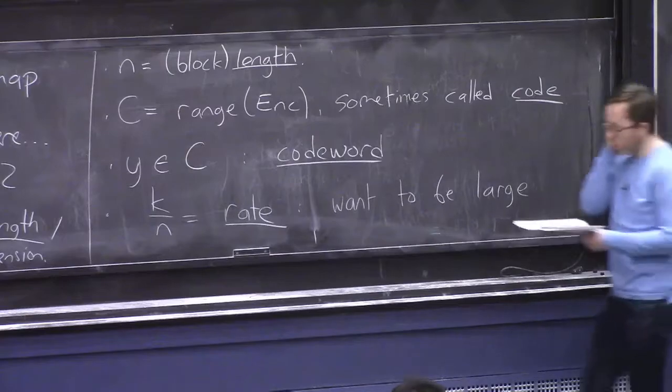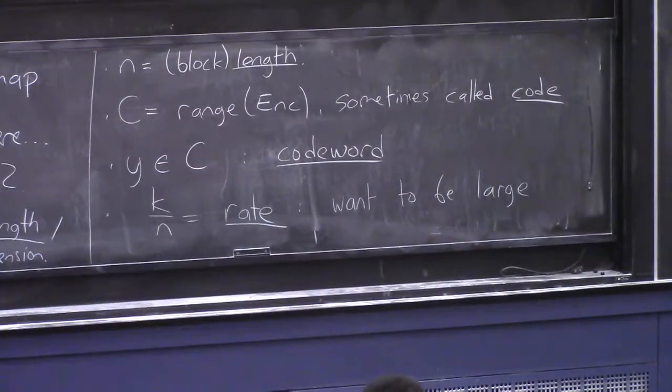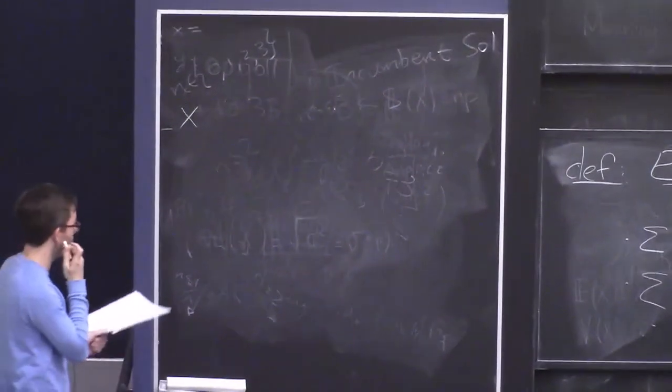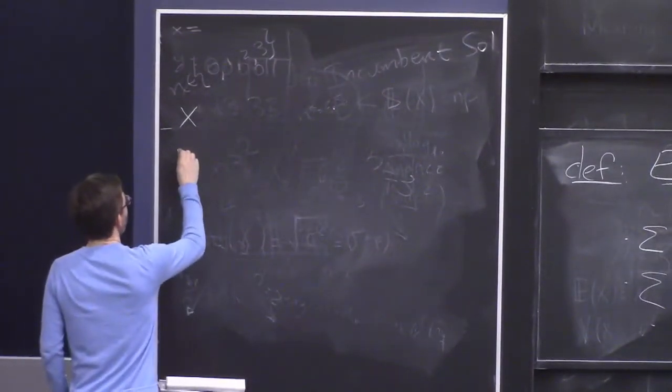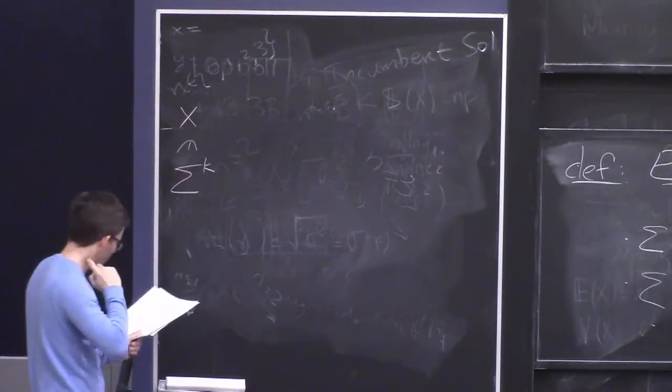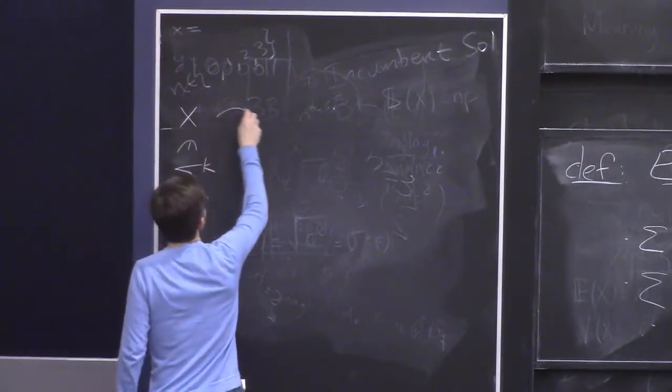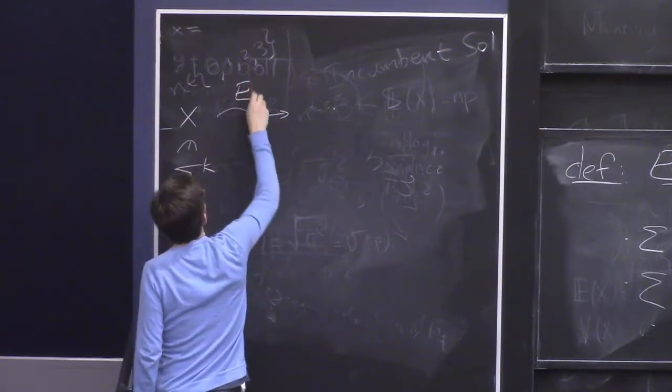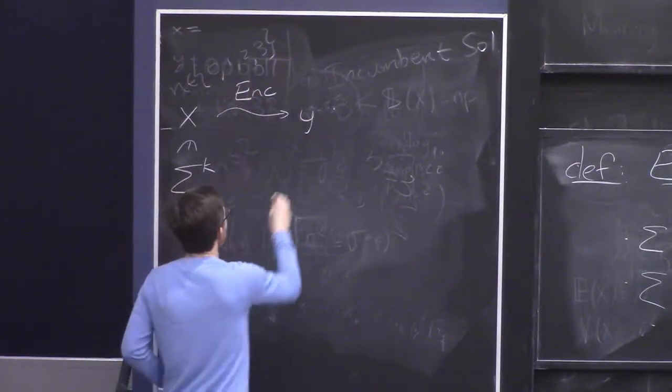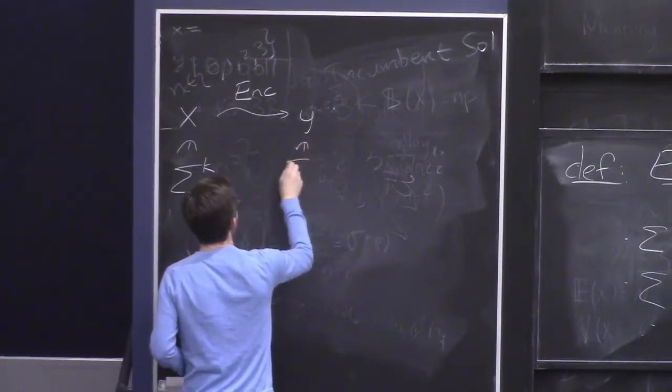So the picture here, to sort of draw a picture, is we start with some message X that the sender wants to send, or the person that's storing data for the future wants to store. And this is a string of length K over this alphabet sigma. And then we imagine that we encode it using this map, and we get a code word Y. This is a string of length N.